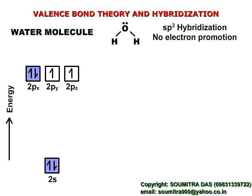There are two orbitals having fully filled electrons and two half-filled orbitals ready to bond with two hydrogen atoms.